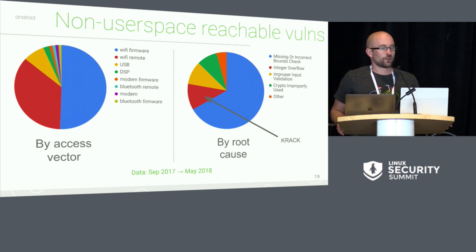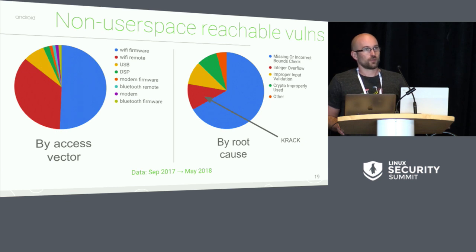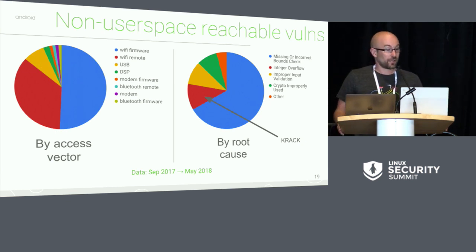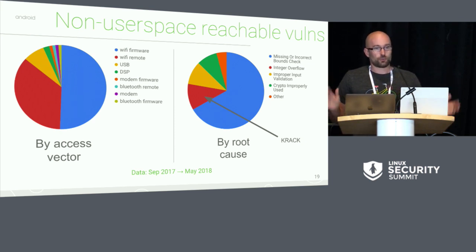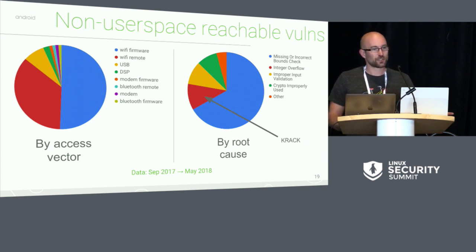A large subset of these bugs are the KRACK vulnerabilities, which are just weaknesses in the WPA protocol. From an Android perspective, the only safe assumption on a network is that the network is untrusted. If you are relying on WPA or encryption on one hop, you are already in bad shape. I could probably create an access point called 'Starbucks' and half the phones in the room would connect to it. WPA is not keeping you safe — I think it's good that we patch it, but the only safe assumption is that the network is untrusted.